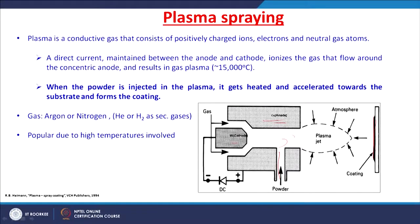Temperatures of 8,000 to 15,000°C can be maintained using different gases or different cathode-anode arrangements. Helium or hydrogen are also used as secondary gases to accelerate the particles toward the substrate. This technique is very popular because of the high temperatures involved, and a wide variety of materials — ceramics, metals, and polymers — can be coated.